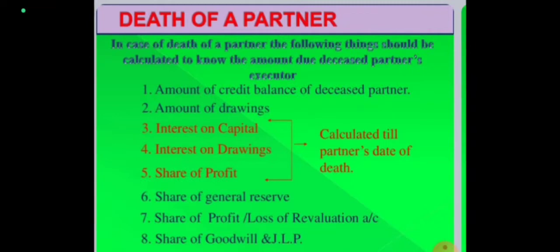Third, interest on capital: if the partnership deed has allowed interest on capital, it will be given. Fourth, interest on drawings: if interest on drawings is to be charged from the partner, it is to be calculated. Fifth, share of profit till the date of death: the partner is to be given profit on an estimation basis. These three items — interest on capital, interest on drawings, and share of profit — are calculated till the date of death, and since the share of profit is not exact, it is recorded as the Profit and Loss Suspense Account.